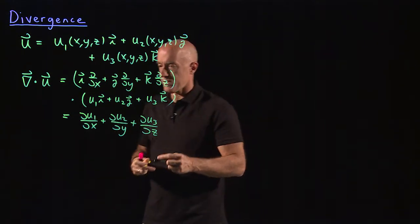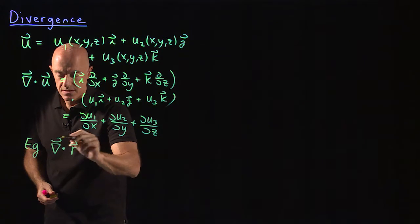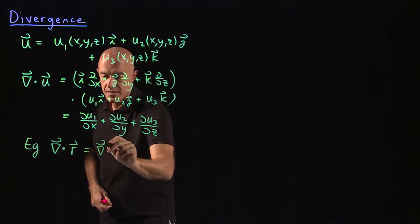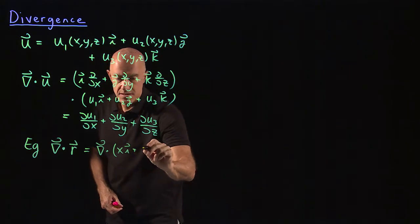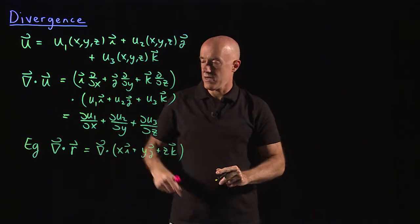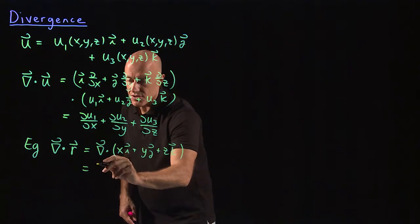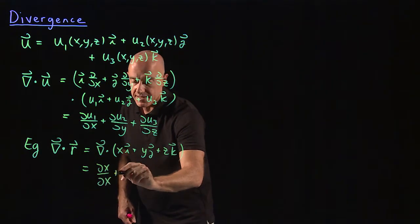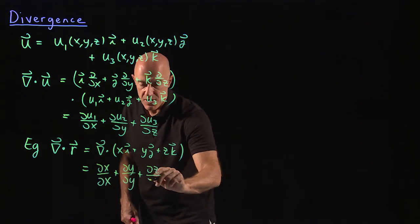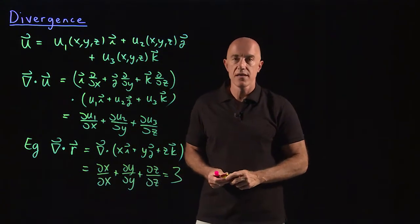Let's look at an example. What is del dot r? r is the position vector, so this is del dot (xi plus yj plus zk). This equals the partial of x with respect to x, plus the partial of y with respect to y, plus the partial of z with respect to z. Each of these is one, so we get three. Del dot r equals three.